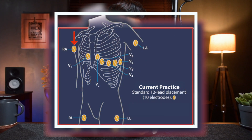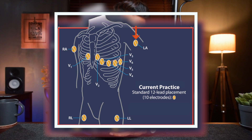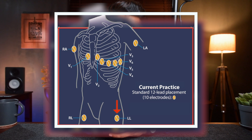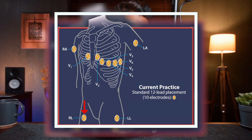Next, apply the electrodes to the patient's arms and legs — again, make sure they're placed in the correct positions. Red marked with the letter R is for the right arm. Yellow marked with the letter L is for the left arm. Green marked with the letter F is for the left leg. Black marked with the letter N for neutral is for the right leg.